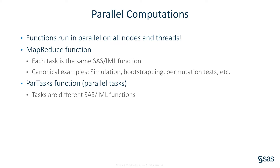The par tasks function enables you to concurrently run multiple independent tasks. For example, you can compute random values, perform a big matrix multiplication, and compute the eigenvalues of a large matrix simultaneously.